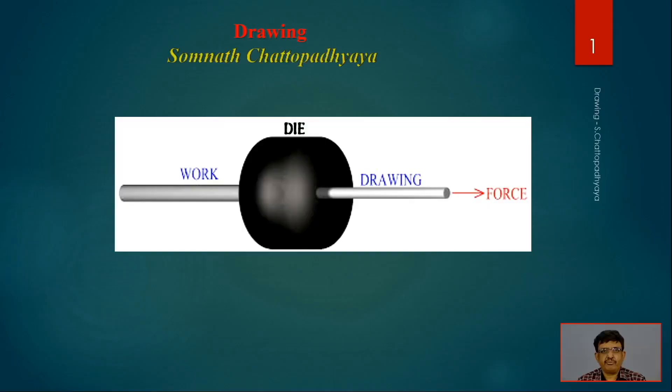Good morning, this is Shomna Chattopadhyay from the Department of Mechanical Engineering, Indian Institute of Technology, Indian School of Mines, Dhanbad. Today we are going to discuss a very relevant topic: drawing — drawing of wire, drawing of bar. As revealed from the title slide, on one side the raw material is fed and on the other side it is pulled through the die with force. That way bar or wire can be manufactured; it is a very popular method for rod and bar production.